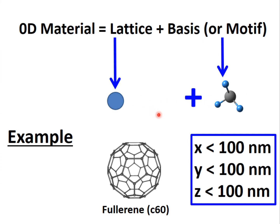The lattice is reduced to less than 100 nanometers in all three directions — X, Y, and Z. Lengths are less than 100 nanometers in the case of zero-dimensional materials. One very good example of a zero-dimensional material is fullerene, also known as C60. It looks like a sphere of carbon atoms and occupies only one lattice point.